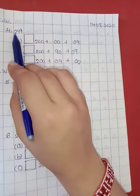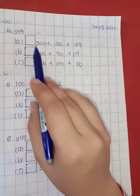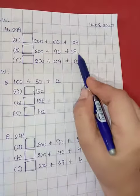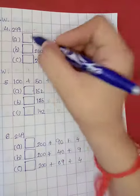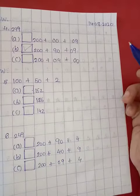Now see the hundreds place. Here is 200. Here is 200. Yes, that is 200. 9 tens 90 and 9 ones 9. So option B is correct. Tick right on option B. By this way, these two are in homework.